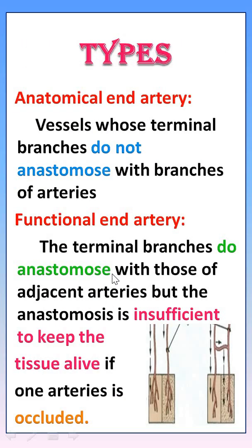There are two types of end artery: one is anatomical end artery, another one is functional end artery. Anatomical end artery means structurally the artery does not anastomose with neighboring blood vessels. Functional end artery means the artery does anastomose with a neighboring blood vessel.